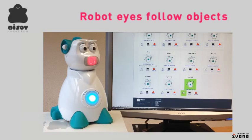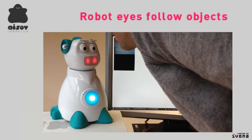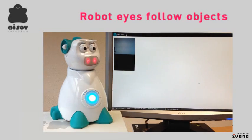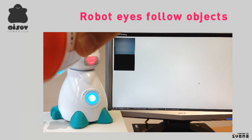Let's start. Hello. Tell me, what color do you want me to track? You can choose between red, green, or blue. Red. Okay, let's follow red objects.